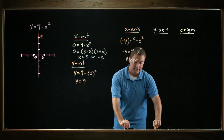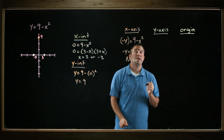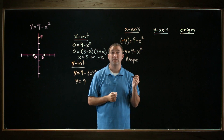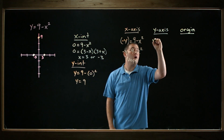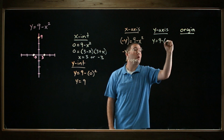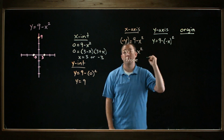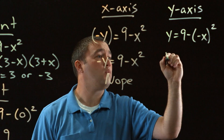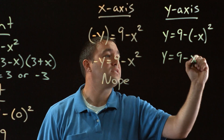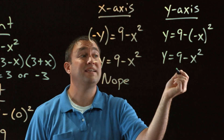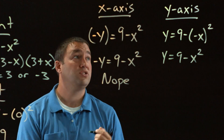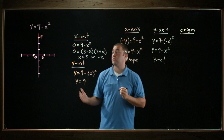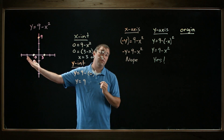Let's do the same thing for the y-axis. Here I'm going to replace x with negative x and see if I get the same equation. So I've got y equals 9 minus the quantity negative x, squared. If I simplify this, I get y equals 9 minus x squared — this is the same as the original equation. So it is symmetric about the y-axis, meaning it looks the same on the right as it does on the left.